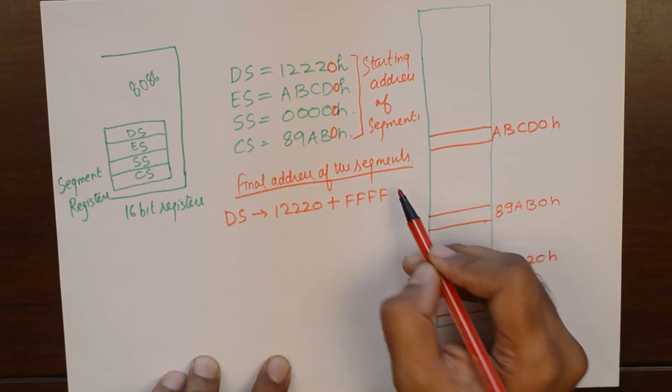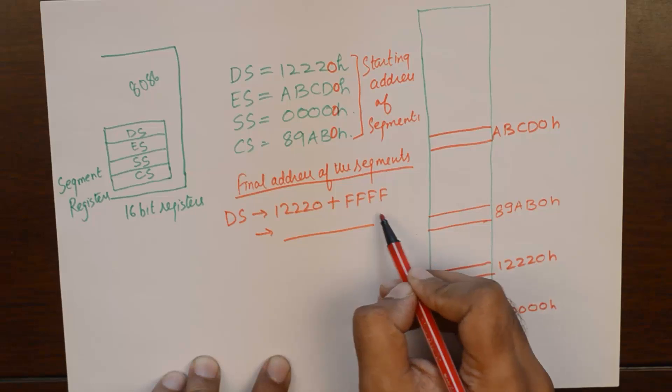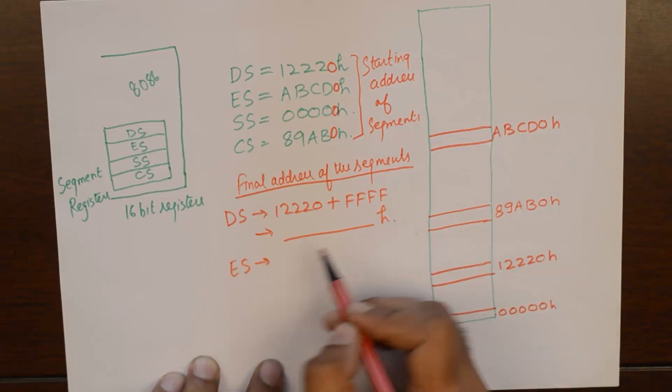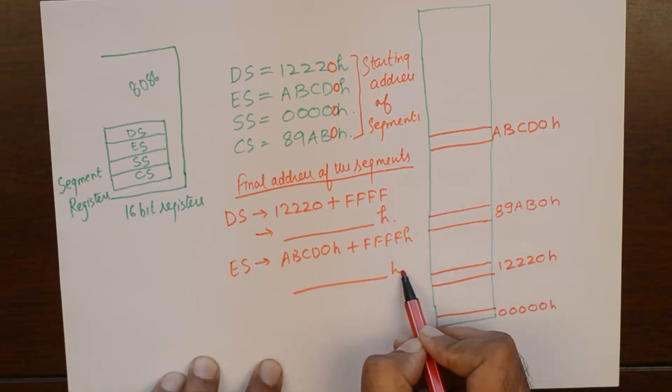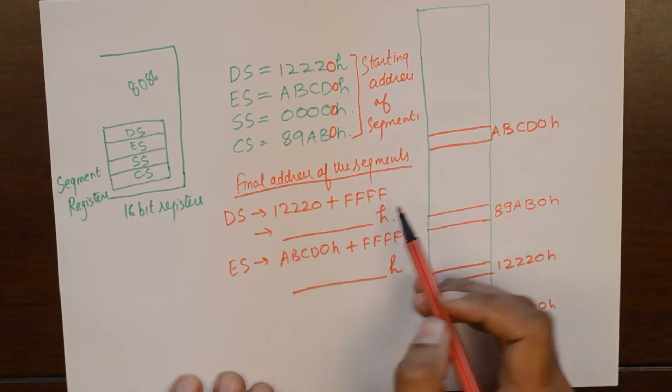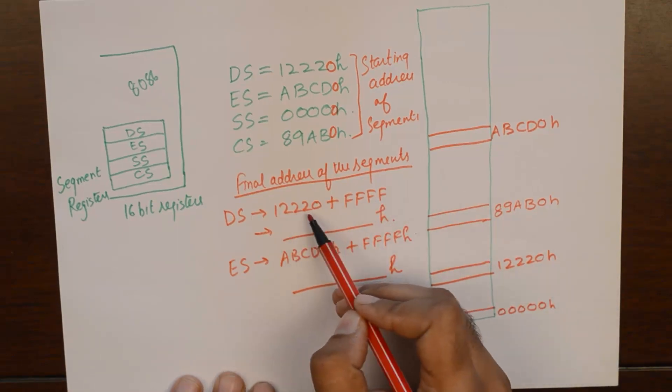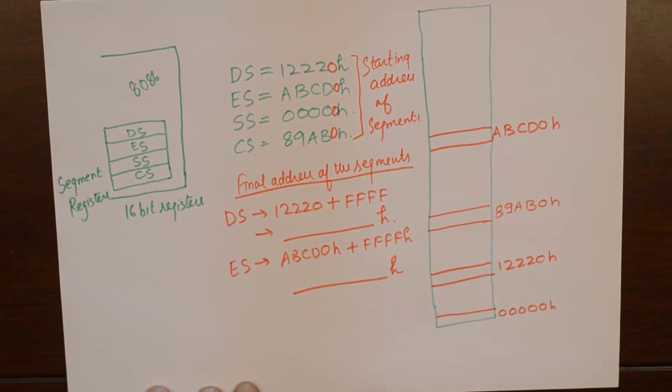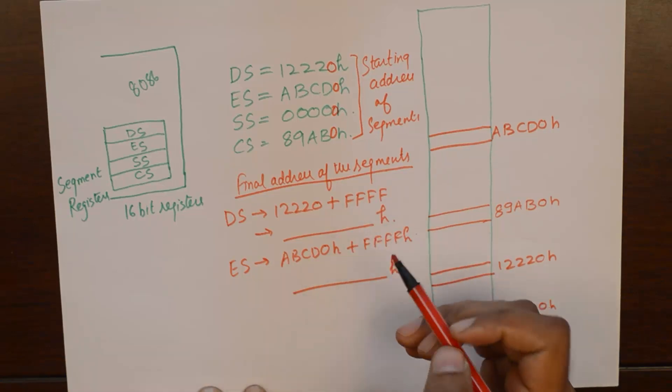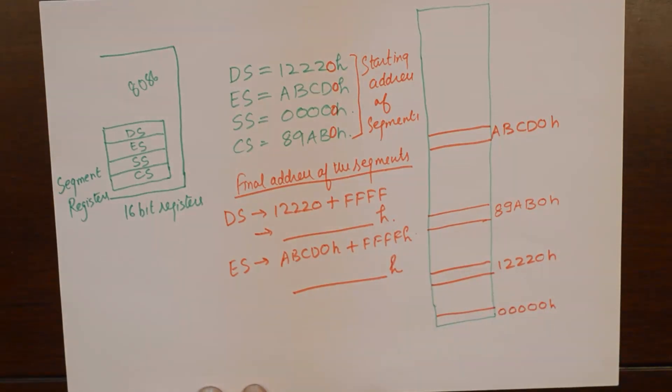If you have trouble adding FFFFH into a hexadecimal number, then you could take help of the calculator 991ES. I have done a comprehensive tutorial on how to fiddle around with the number systems in the calculator. The last address is found out by adding 64K into the starting address, and 64K is FFFFH. And that is how the segments are assigned in 8086.